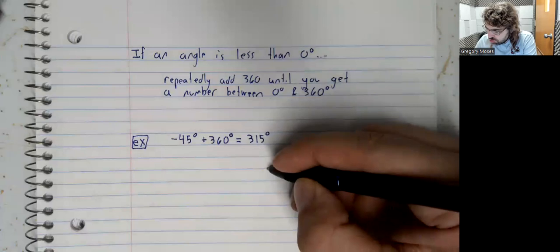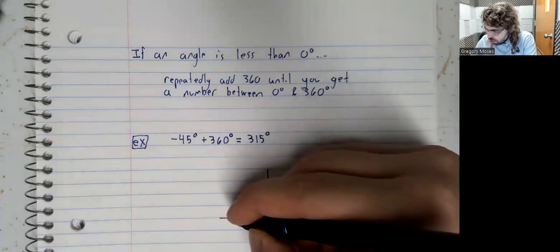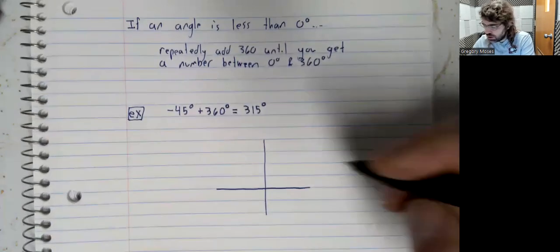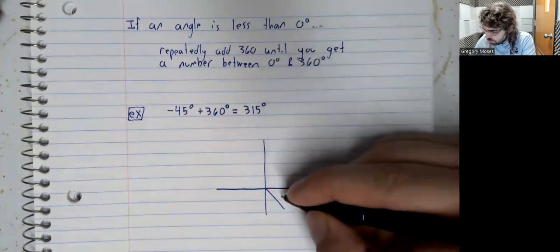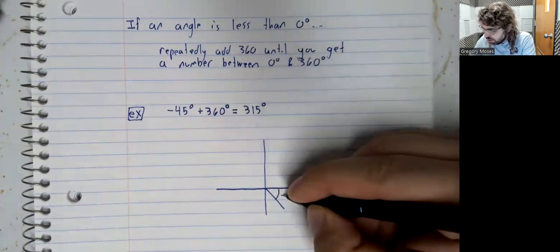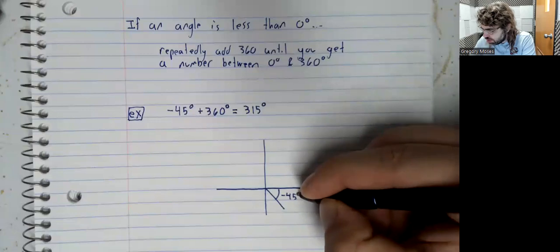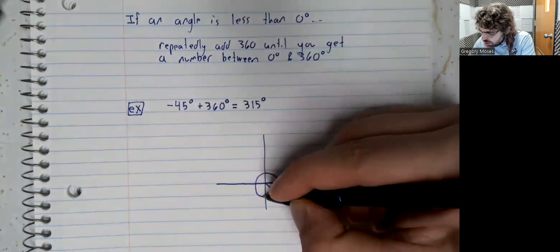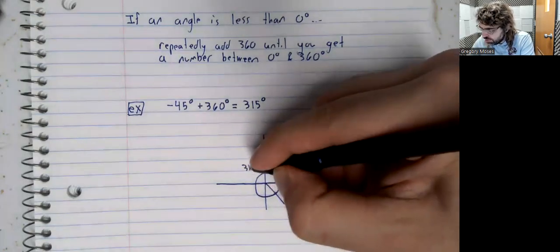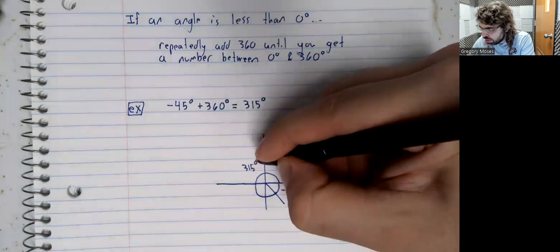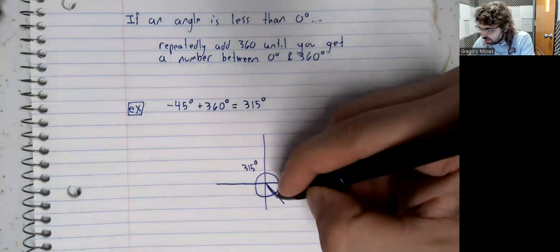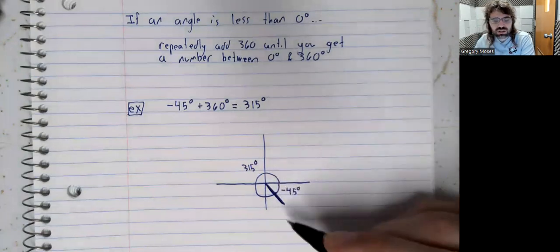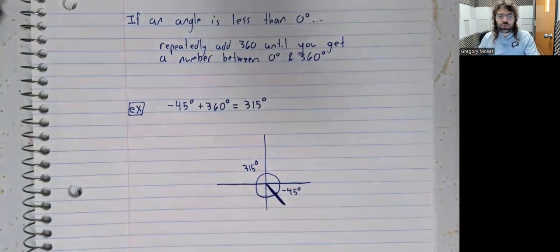And again, just so we're sure we're all on the same page about what's going on here. Negative 45 degrees is this. Positive 315 degrees is this. So these two angles both have this line segment as the terminal side.